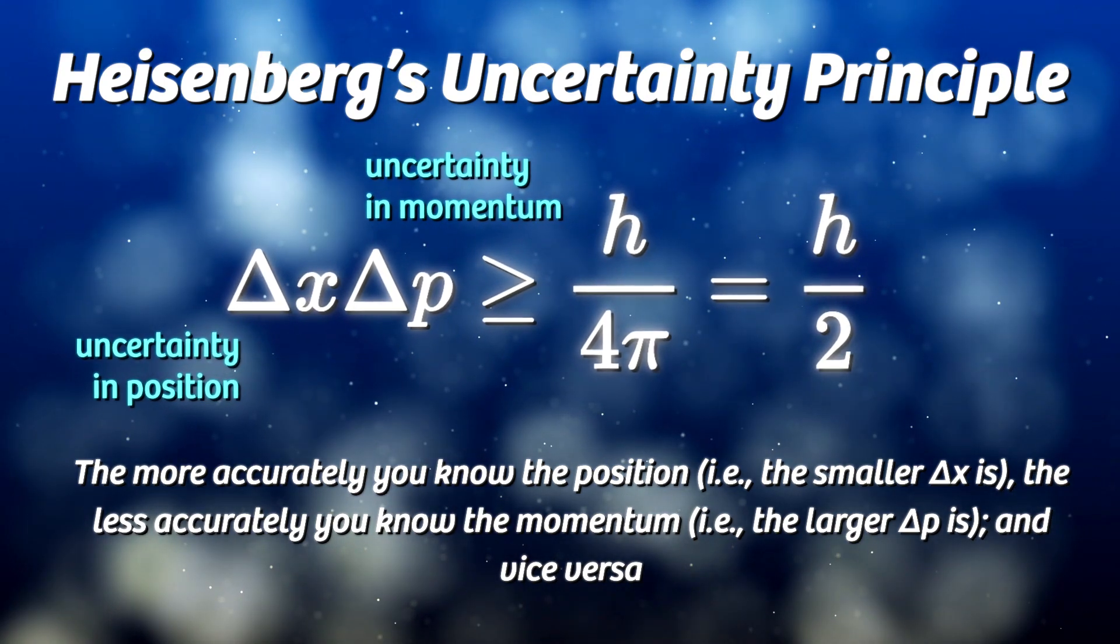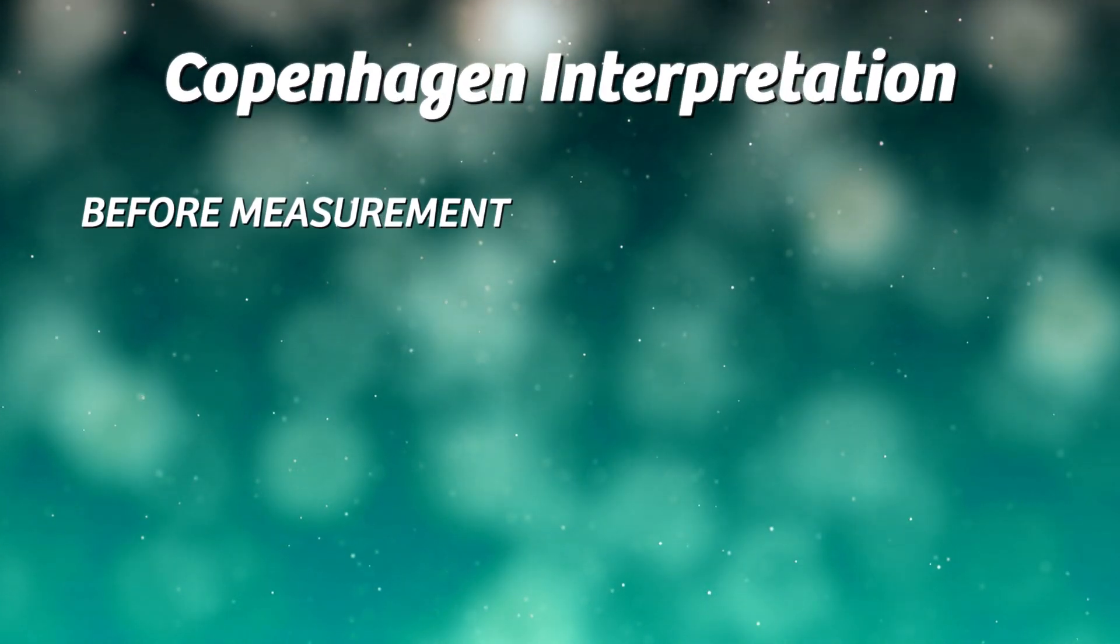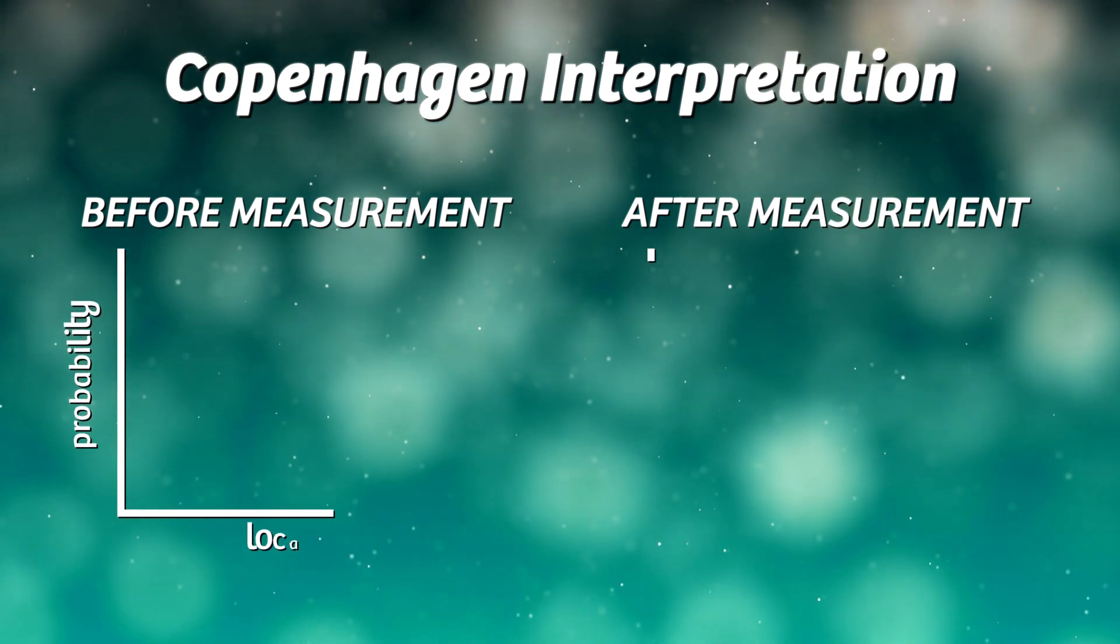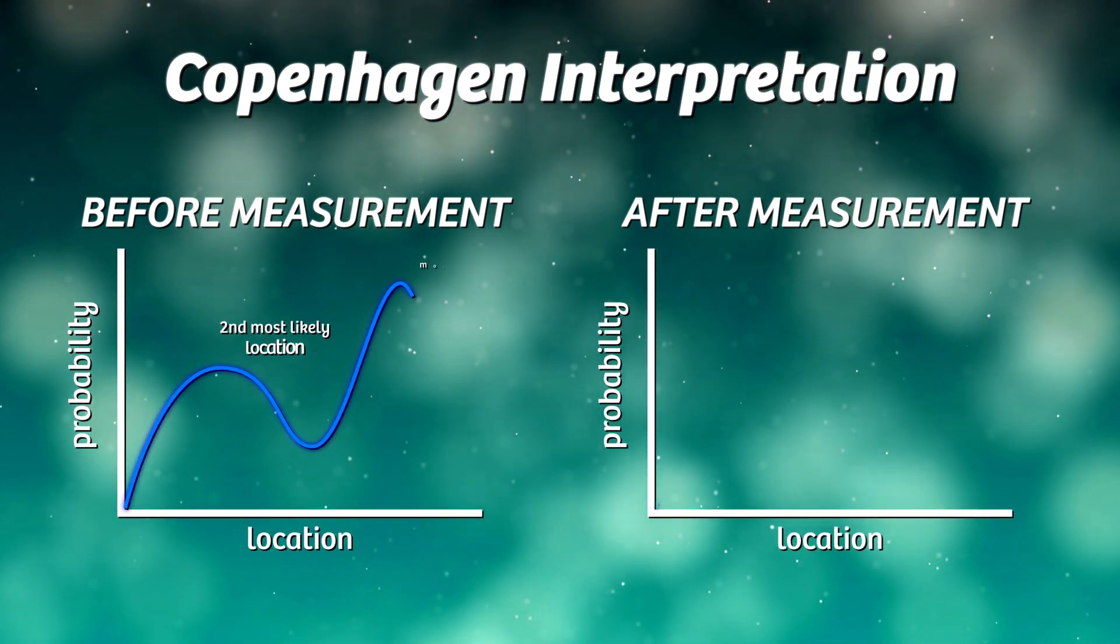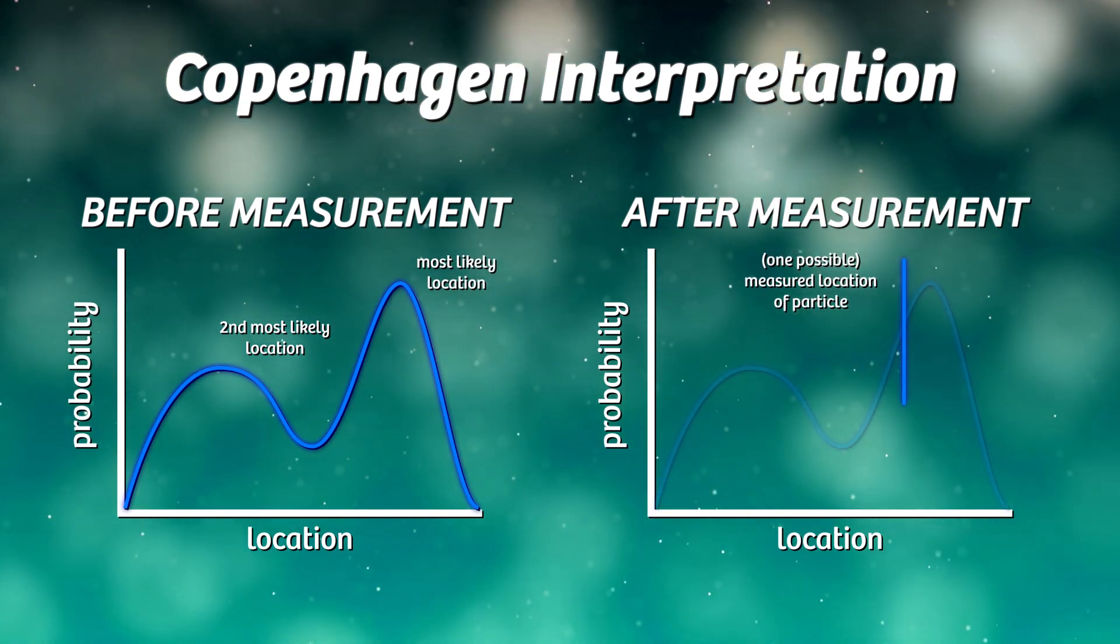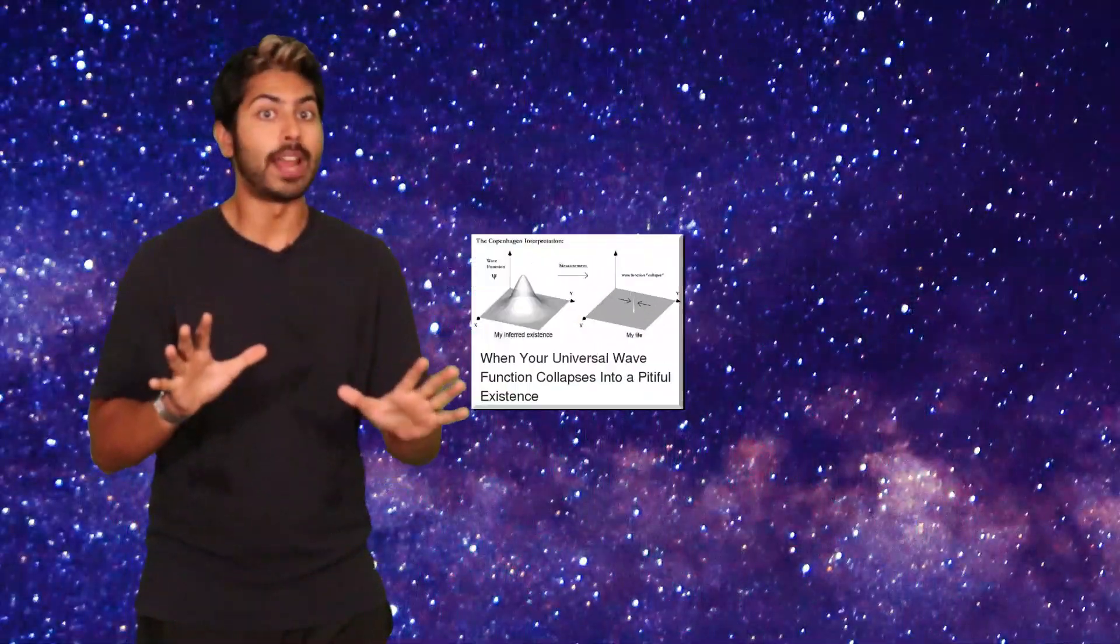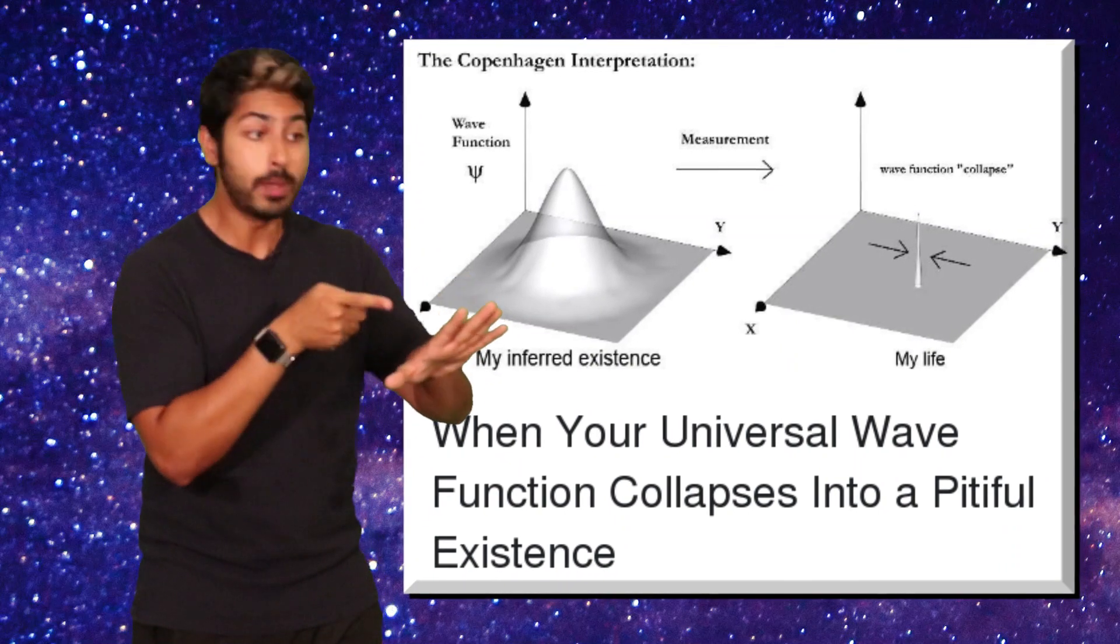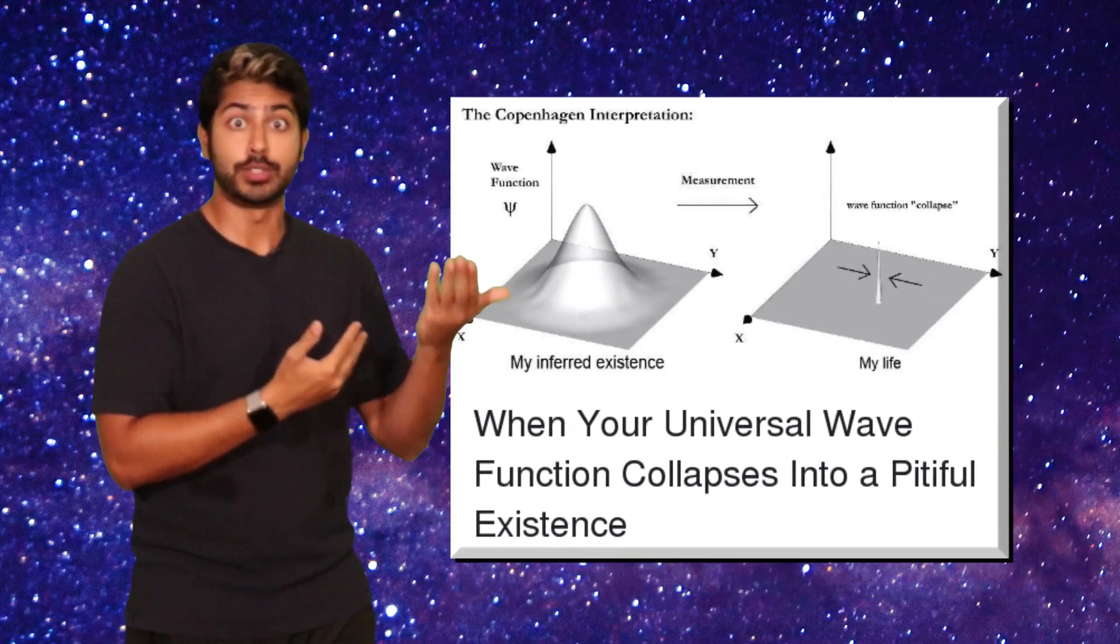He later helped develop the Copenhagen interpretation of quantum mechanics, which stated that a quantum particle doesn't exist in one state or another. Instead, it's in all of its possible states simultaneously. It's only when we observe this state that a quantum particle is forced to choose one probability, and that's the state we observe. That's right, it's stating that reality exists in a certain way until we measure it. It's reactive to conscious observation. Pretty incredible stuff.